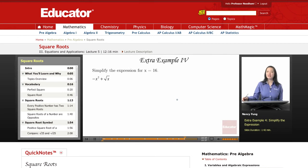Let's simplify the expression for x equals 16. We're going to use substitution here. Negative 16 squared plus the square root of 16.